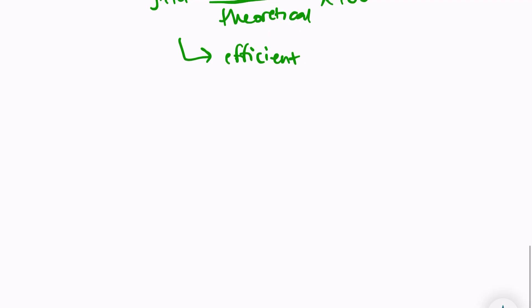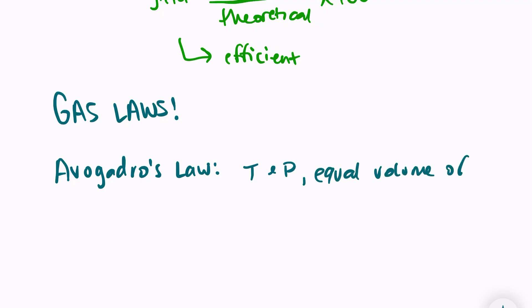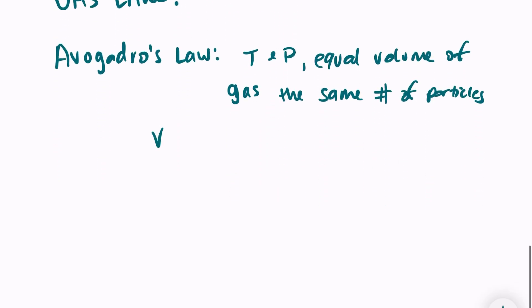The last part of topic one goes over the gas laws. The first gas law is Avogadro's law. What his law says is that for equal volumes of gases measured at the same temperature and the same pressure, there will be the same number of particles. If I have a constant temperature and pressure, equal volumes of gas—any gas—will have the same number of particles. So I can say that volume is directly related to N, which is the number of moles of gas.